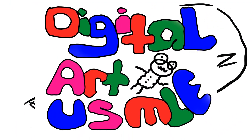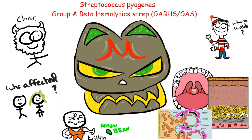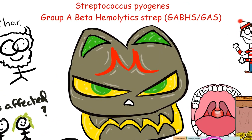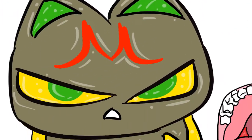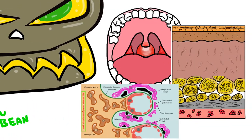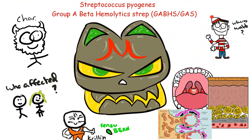Hey guys, welcome to Digital Arts US family. Sorry about that - I had something stuck in my throat. So today we're going to be covering Streptococcus pyogenes. We'll begin by covering its characteristics, where it's normally found, who's affected by it, the organ systems affected by it, and the treatment options based on the type of infection and the drug mechanism of action.